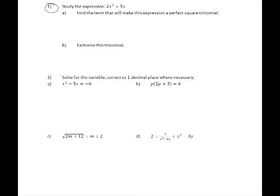Study the expression 2x² + 5x. Find the term that will make this expression a perfect square trinomial. In other words, what you are being asked to do here is to complete the square. So to make it a perfect square trinomial, you're going to complete the square for this expression.